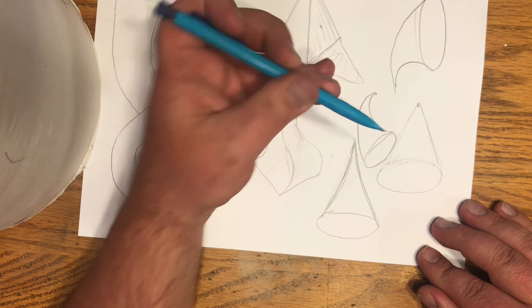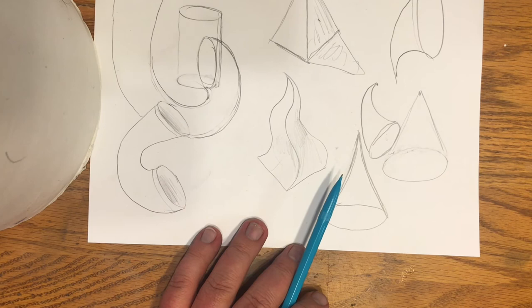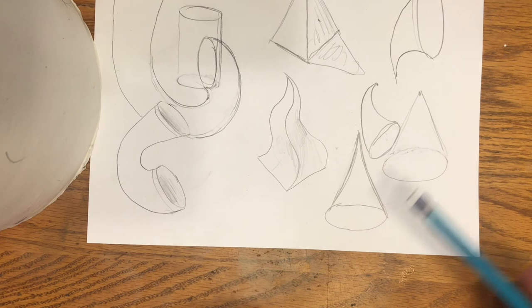Alright guys, that's how you do a cone that's bent, a cylinder that's a tube and twisted the way you want it, and then a twisted pyramid as well. So, thanks for watching.